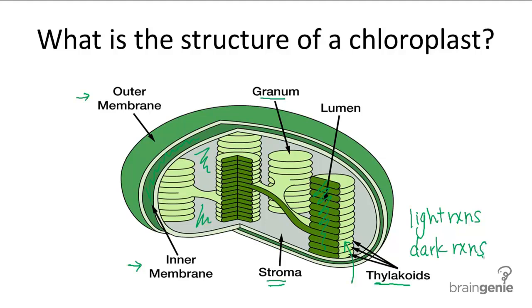So in summary, chloroplast has a double membrane but it also has a third membrane called the thylakoid membranes which form grana. And the light reactions occur in the thylakoids whereas the dark reactions occur in the stroma.